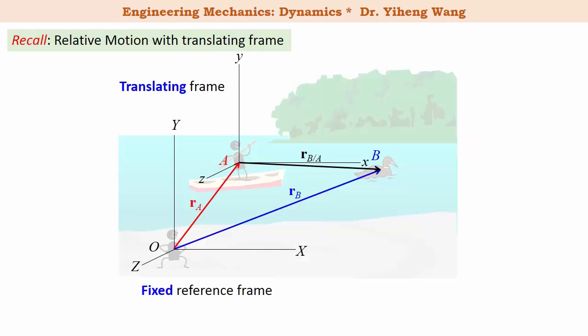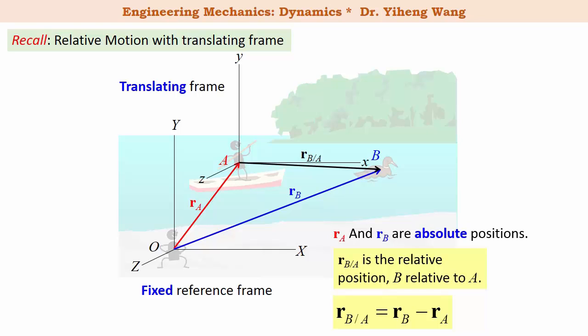If you recall, we already studied the relative motion of two particles. However, our previous study was limited to translating frames of reference — in other words, the motion of the moving coordinate system is only translating with no rotation. In that scenario, r_A and r_B are both absolute positions with respect to the fixed reference frame, and the relative position vector of the two particles is simply the difference of the two absolute position vectors. This is still true even when the moving reference frame is rotating, as we will discuss in this video.